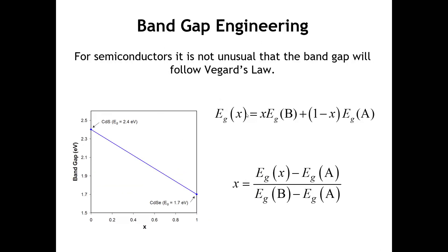Not only the dimensions of the unit cell can vary linearly, but there are some properties that also tend to vary linearly with composition. When that happens, we would say that that property obeys Vegard's Law. Probably the most widely recognized property that obeys Vegard's Law would be the band gap of a semiconductor. This is not always true, but oftentimes there might be a rather linear evolution of the band gap as a function of composition.